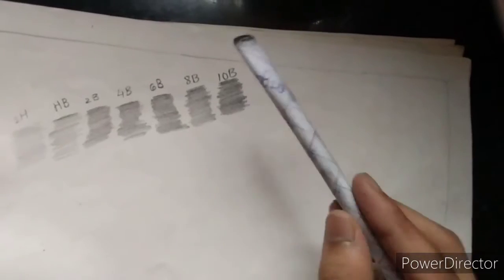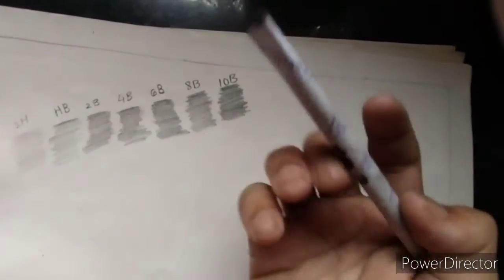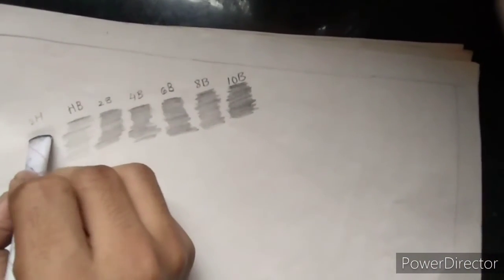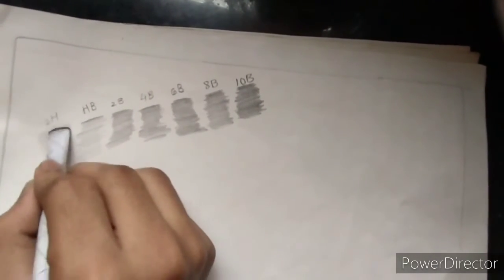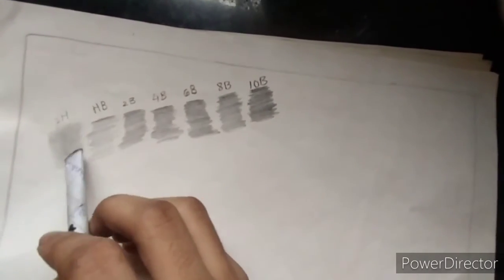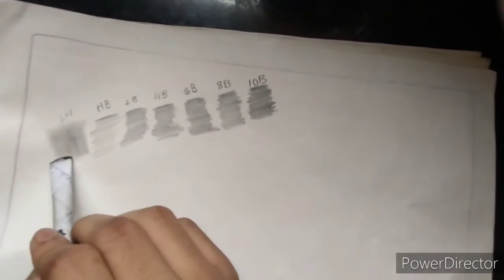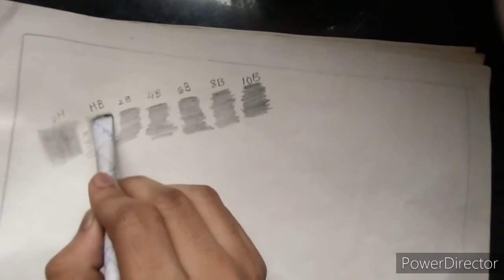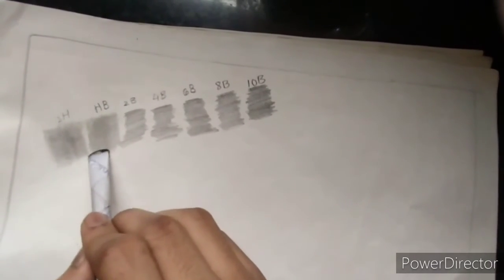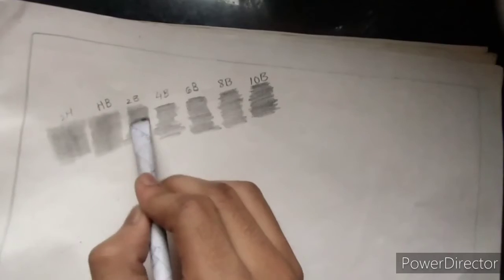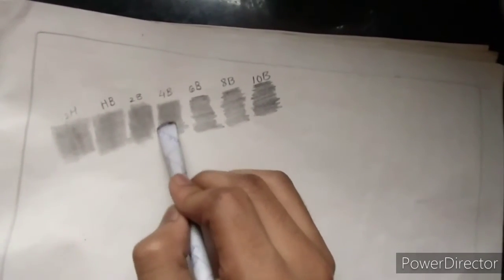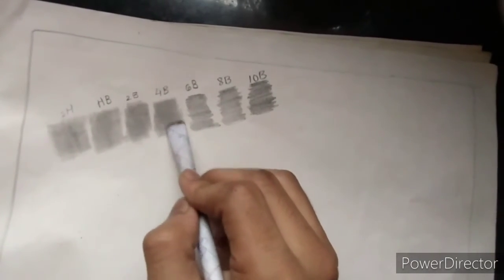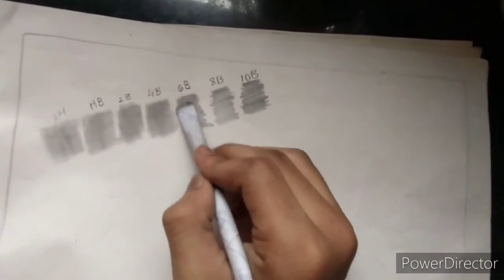So now let's test with the blender. This is my blending stump that I have made by own. So let's try with blender. After blending it gets a little bit darker because the particles get separated, so it becomes darker.